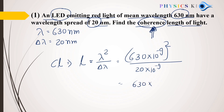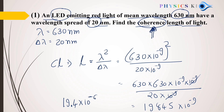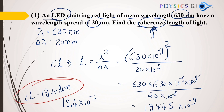So we have 630² × 10⁻⁹ × 10⁻⁹, divided by 20 × 10⁻⁹. The 10⁻⁹ cancels. Using the calculator: 630 × 630 divided by 20 gives 19,845 × 10⁻⁹, which is 19.4 × 10⁻⁶, that means 19.4 micrometers. This is our answer — the coherence length is 19.4 micrometers.